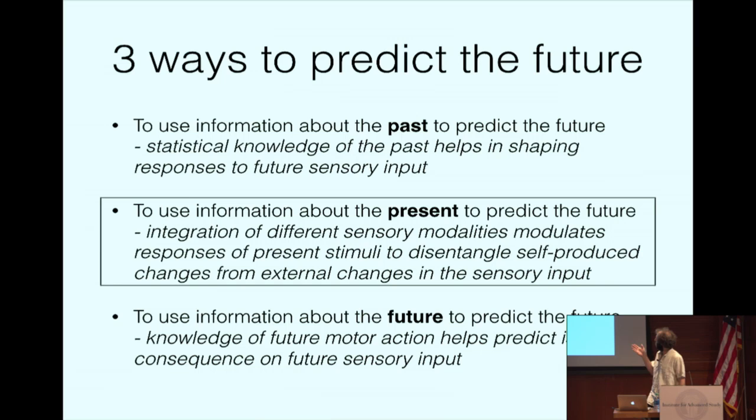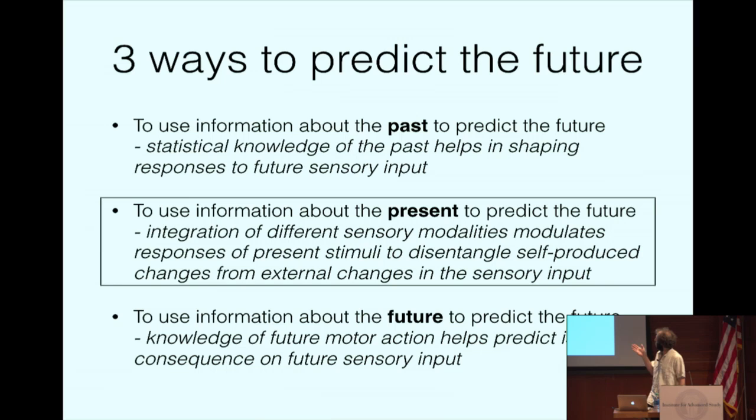We concluded that basically this structure can already at the first level of processing do a quite complicated computation of disregarding my own movements in order to give an accurate representation of what's really going on outside. This is the last point that the integration of different sensory modalities modulates responses of present stimuli to disentangle the self-produced changes from the external changes that happened in the world. I think all these three together are basic concepts of how the brain can make these predictions in order to become a very good filter. To very accurately decide what's a real signal and what's noise. And I think I don't have any more time. So, there's no time for the demo.